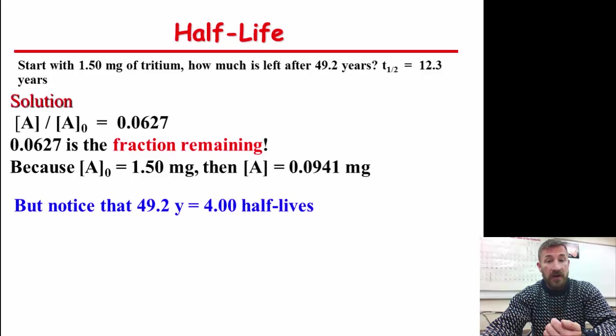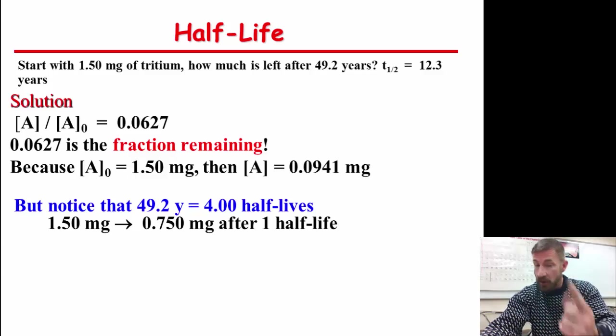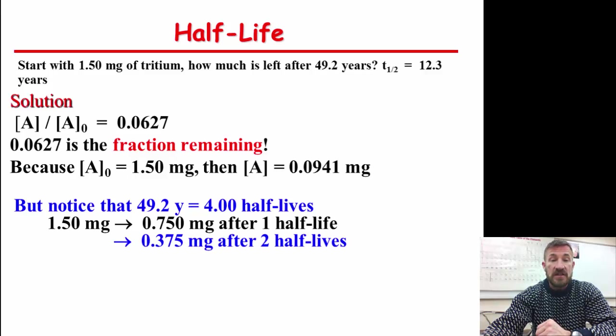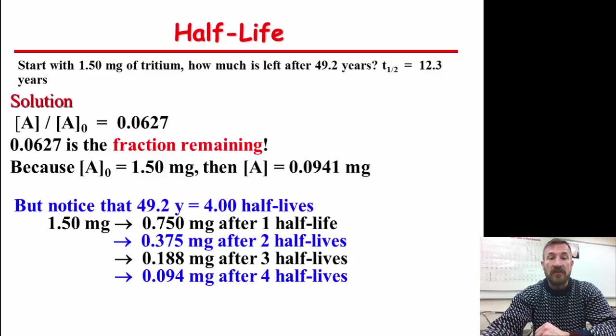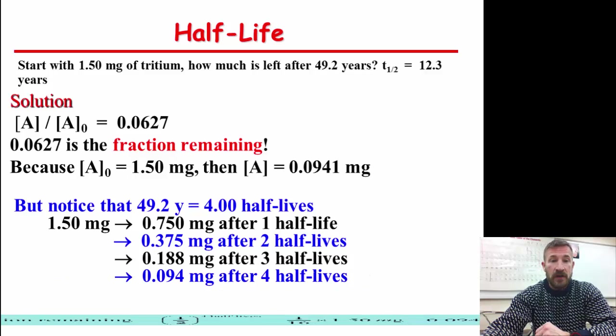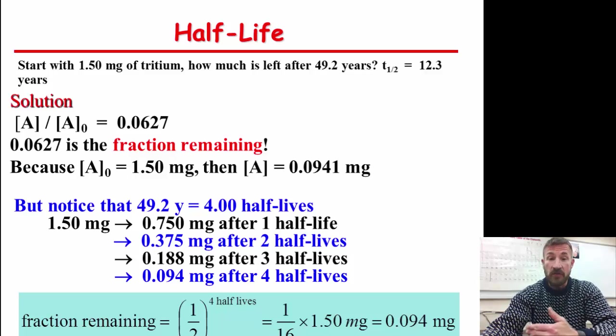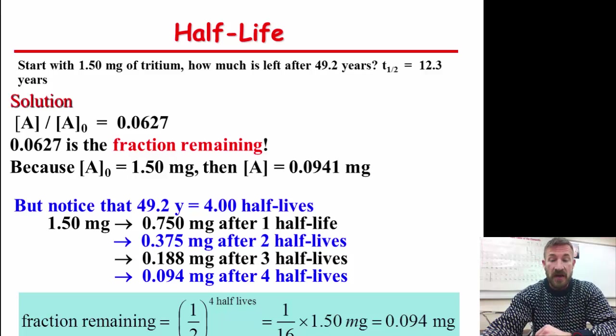Notice that at 49.2 years, you've gone through exactly four half-lives. So an easy way to think about this is 1.5 milligrams goes to 0.75. That's one half-life. Now we need to split it in half again. That's two half-lives. Split it in half again. That's three half-lives. Split it in half again. And now we have four half-lives. And so the fraction remaining after four half-lives would be 1/2 to the number of half-lives, which is 4, which would be 1/16th times initial mass gives us the amount of the radioactive tritium that's remaining.